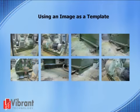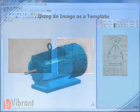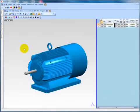In many cases, it may be possible to use a technical drawing or photograph of your test structure to aid in creating a 3D model of it. In this case, we have multiple images and drawings of a hammer mill. Images can be applied to the background of any of the single directional views in ME Scope.